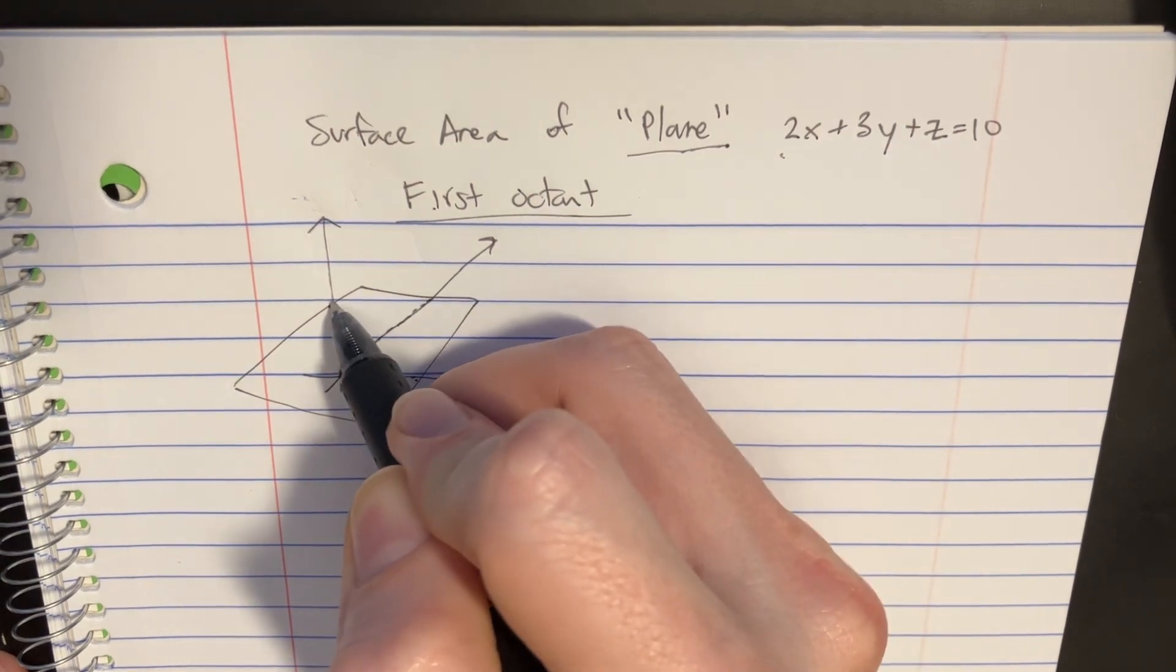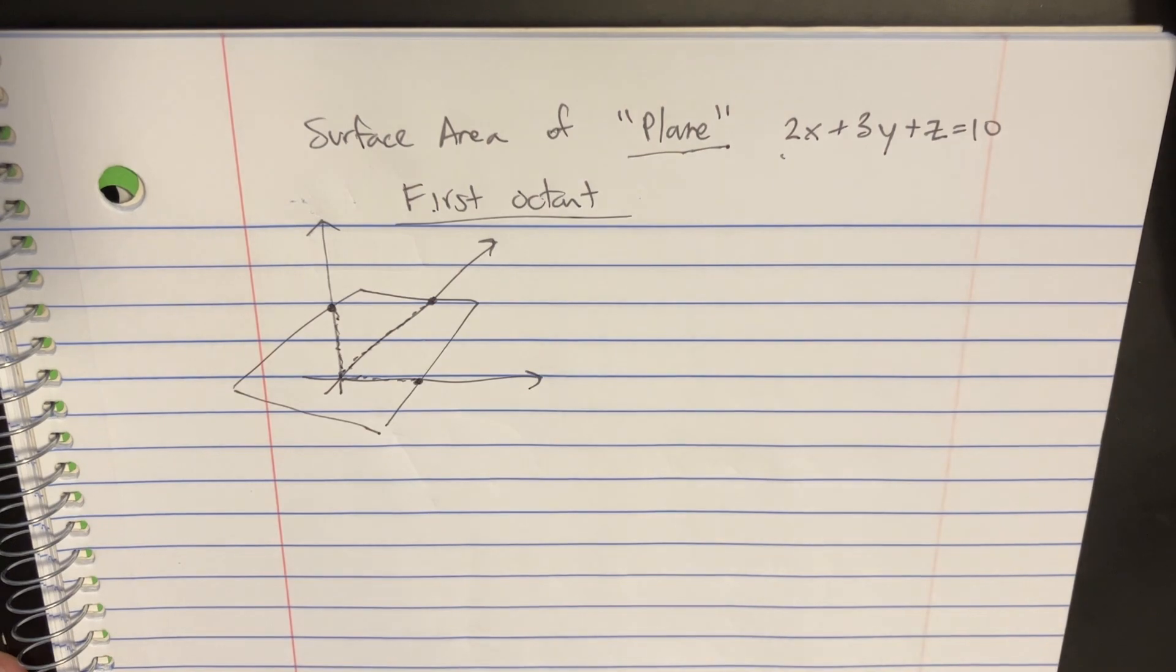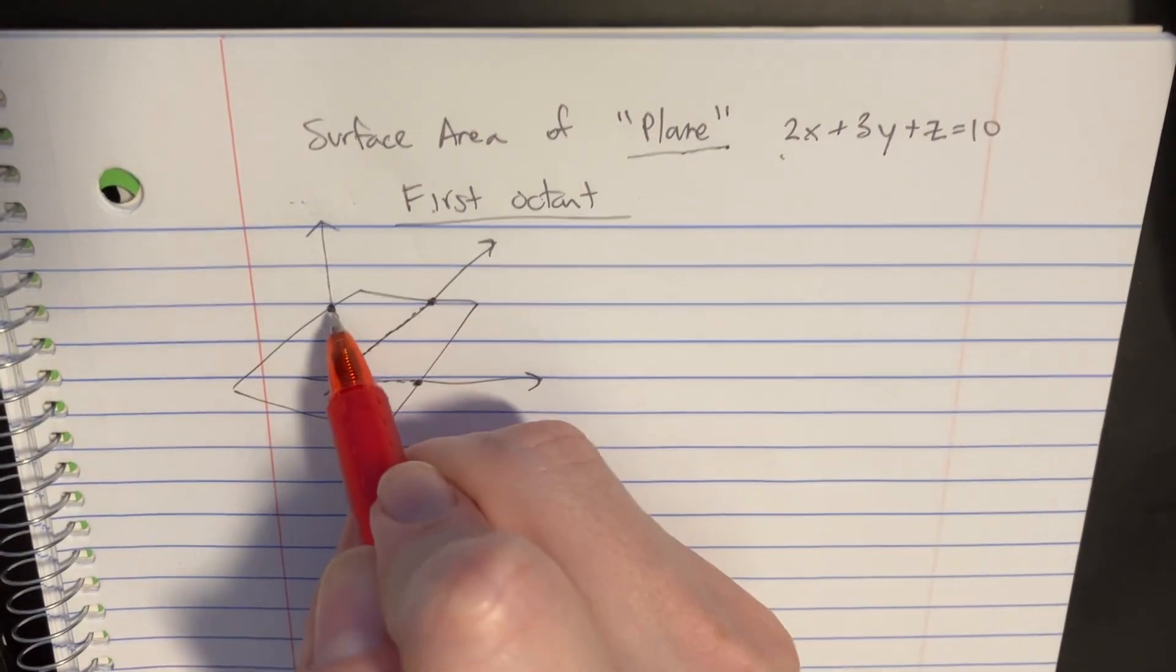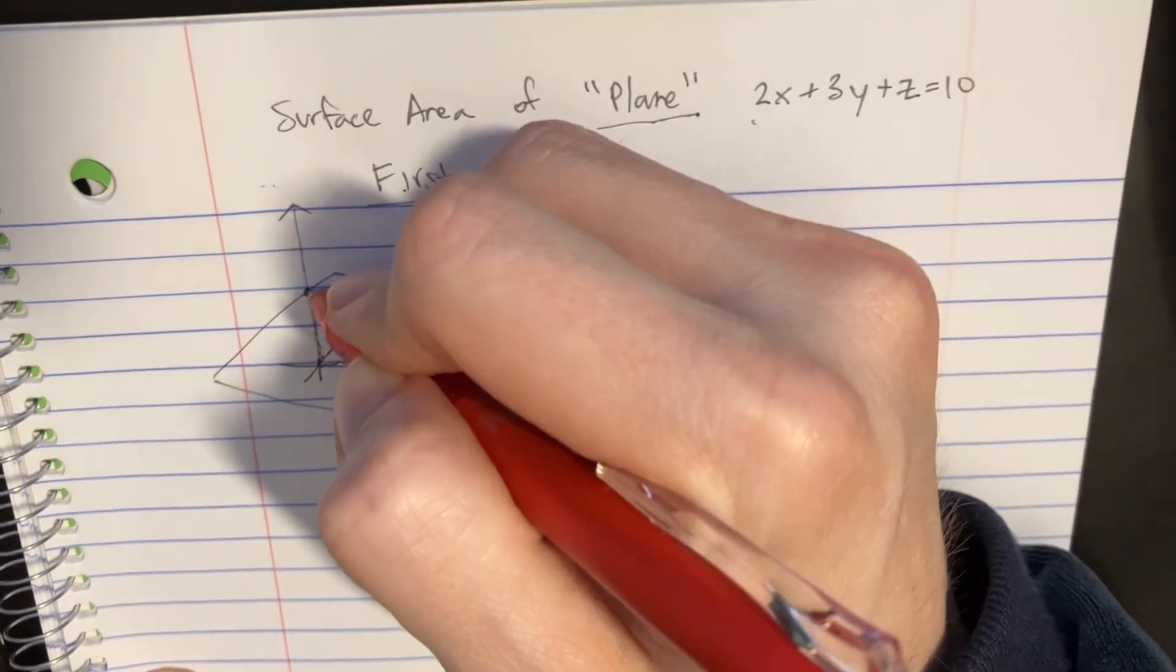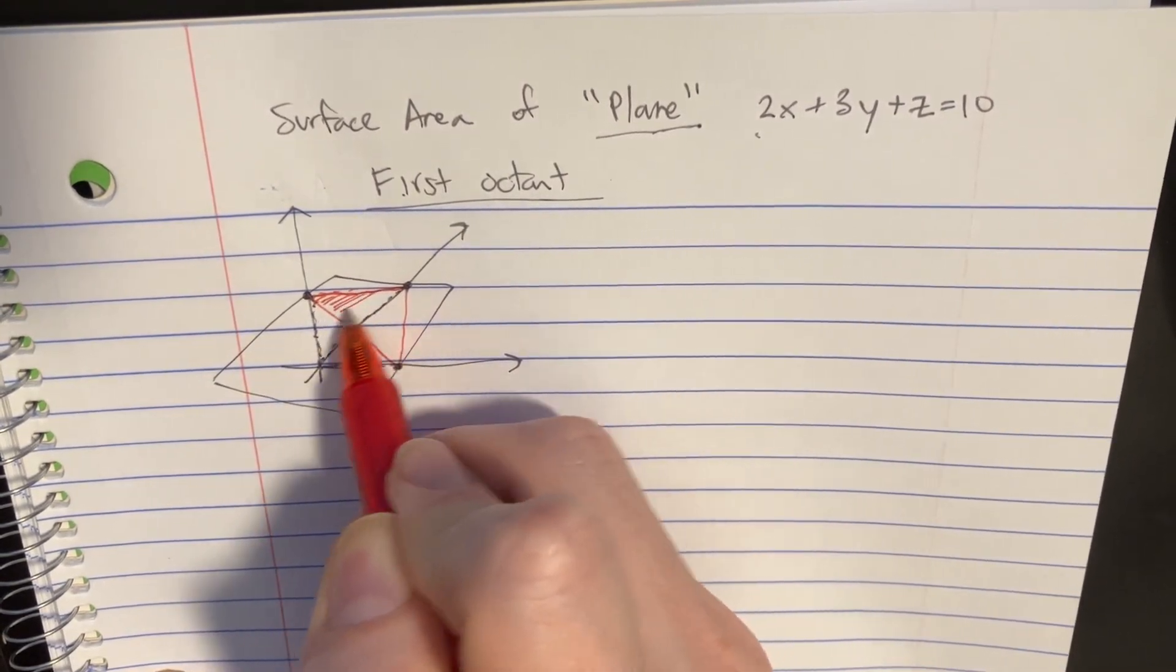I'm going to notice that it's going to intersect here, here, and here. So that's interesting. That's actually going to create a triangle like this, and so that's going to give us a little area here.